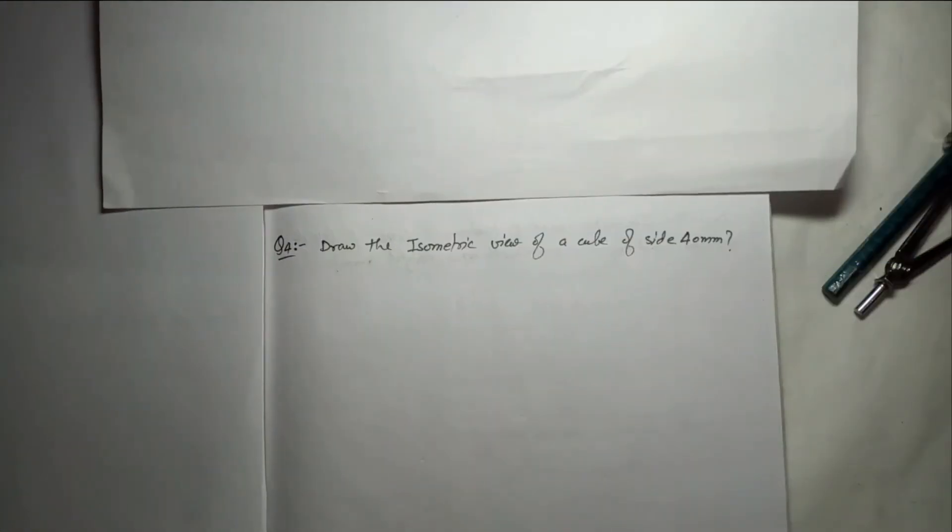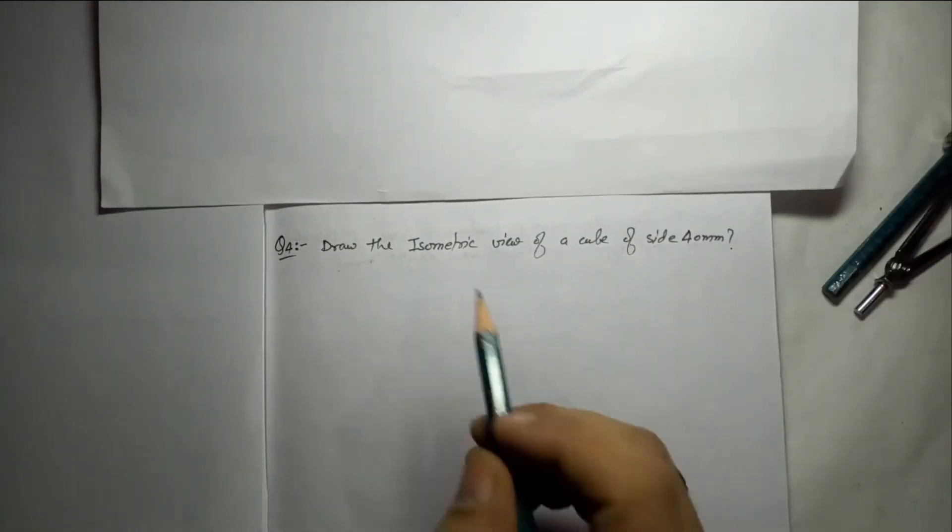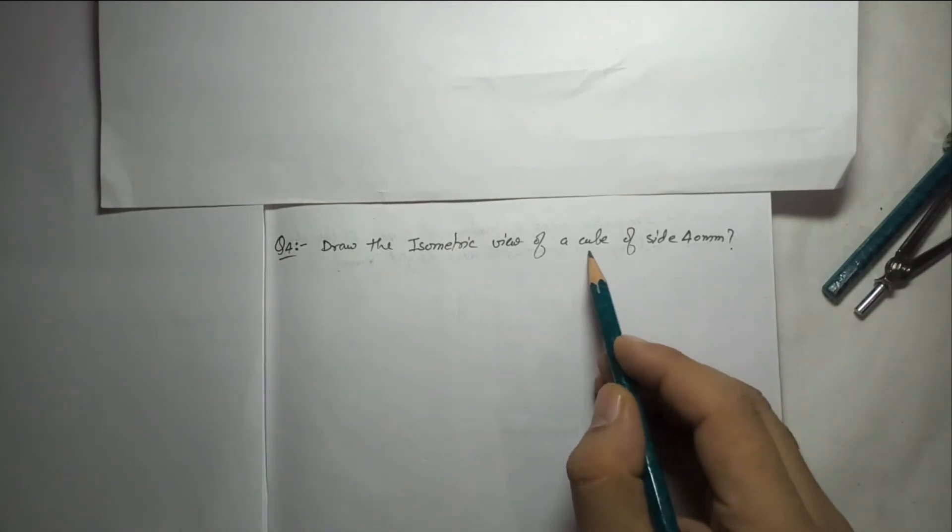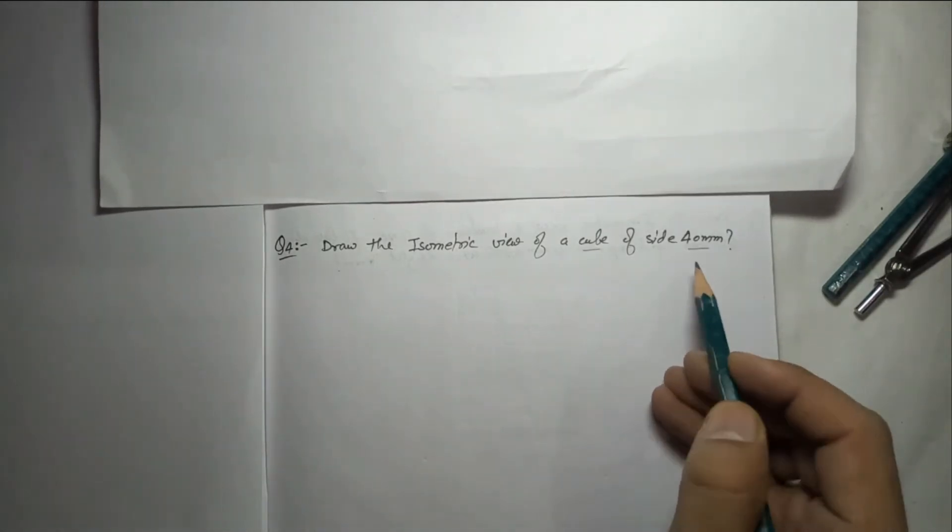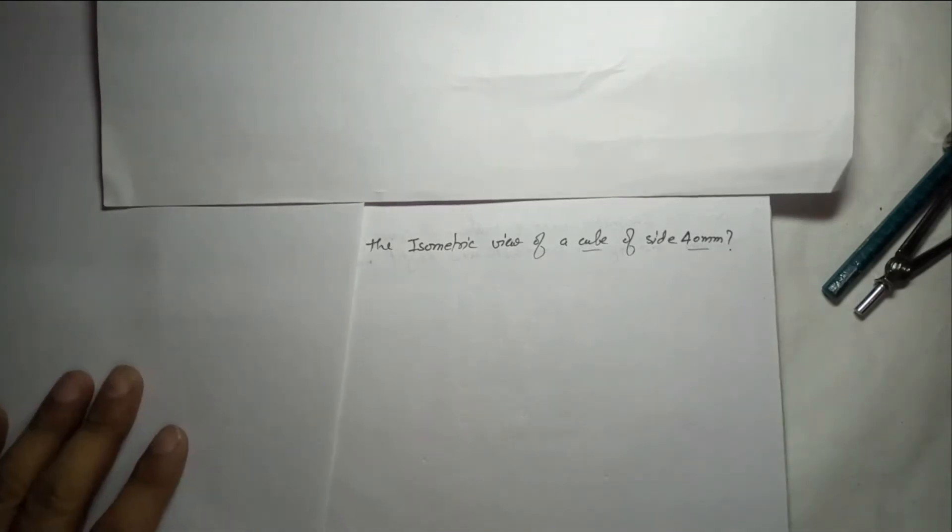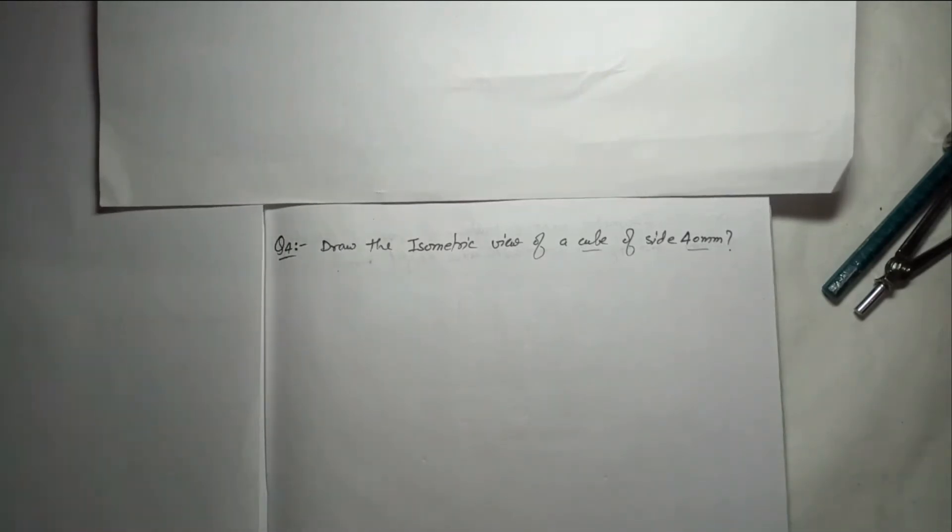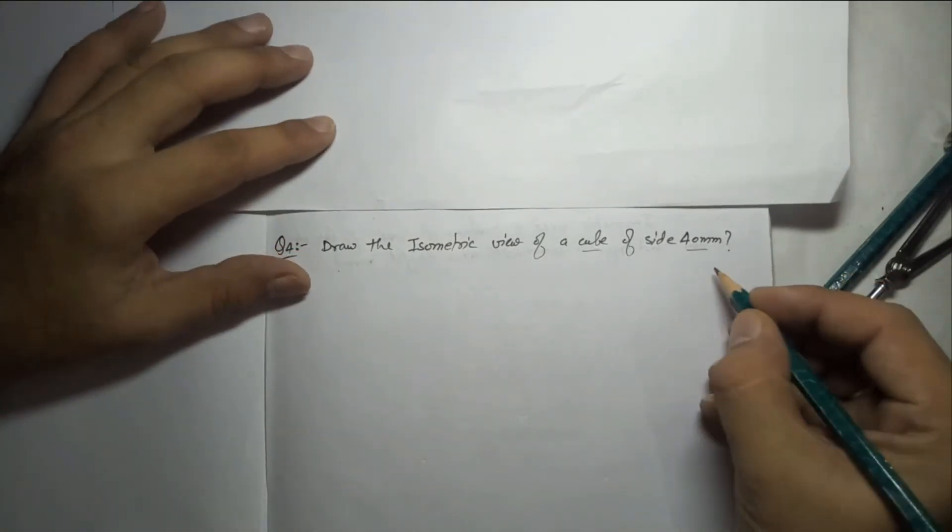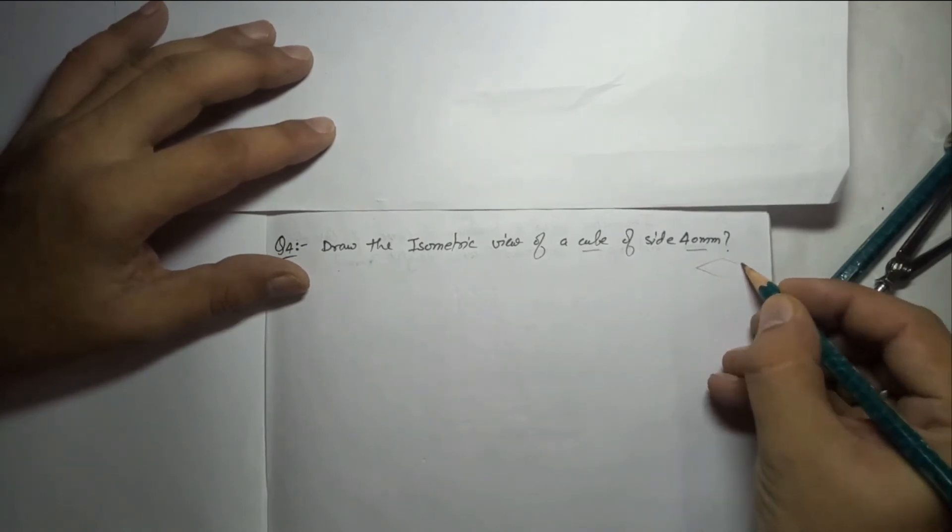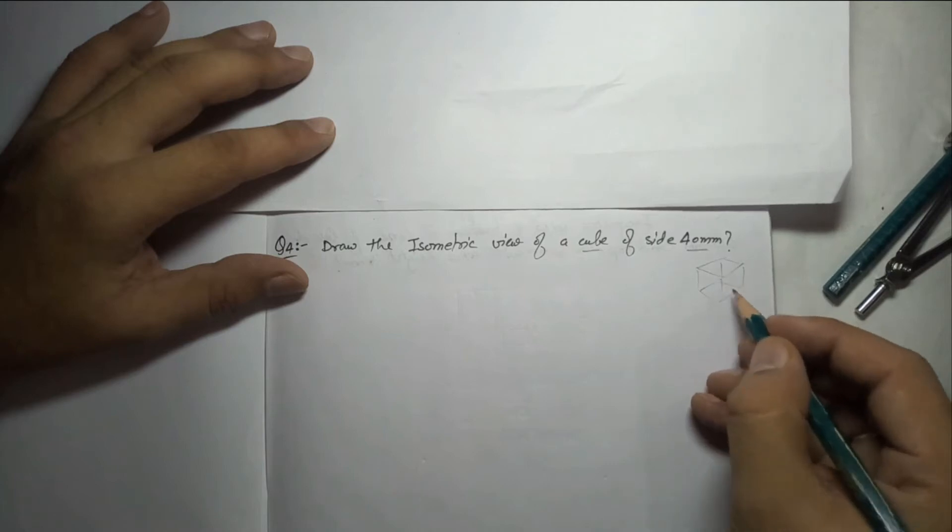Hello everyone, now we will see one question: draw the isometric view of a cube with side 40. Whenever we have to draw a 3D object, it will have three dimensions. What is a cube? We can make another freehand sketch - this shape will be a cube.